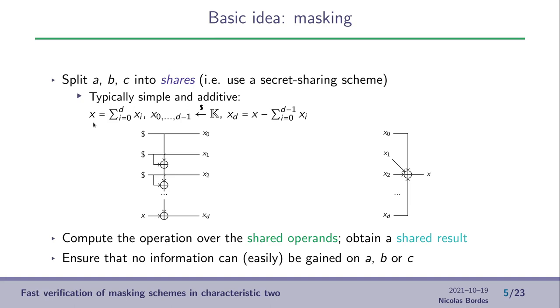Then we want to compute the operation, the multiplication, over the shared operands to obtain a shared result and we want to do so while ensuring that no information can be gained on either A, B or C during the computation.